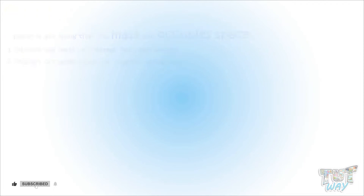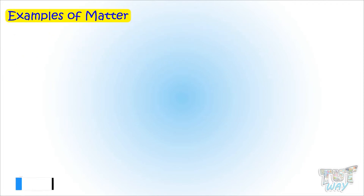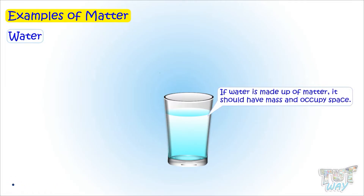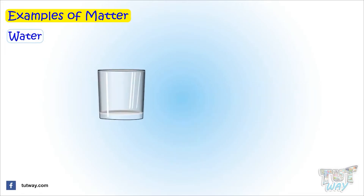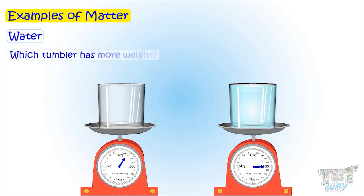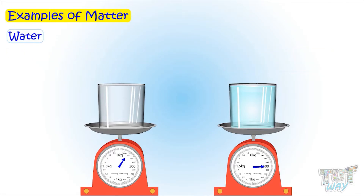Let's take an example to prove it. We learned that everything is made up of matter. So let's take a few things and see if they are made up of matter. First is water. We have to see if water is made up of matter — it should have mass and occupy space. Take an empty tumbler and weigh it. Now fill it with water and again weigh it. The filled tumbler has more weight. It means that water has mass, or it has weight.